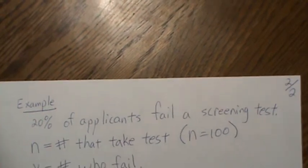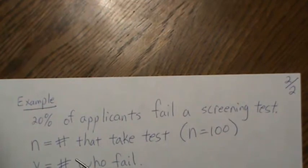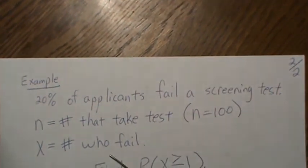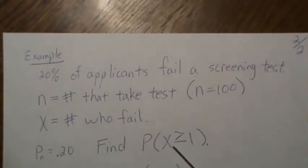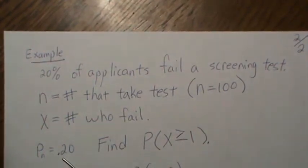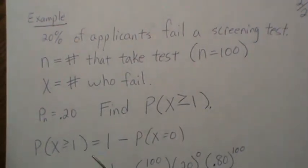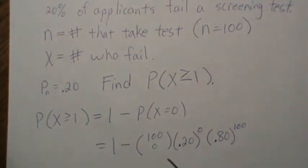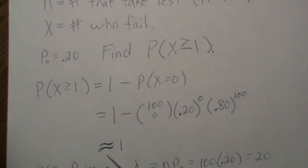So let's say 20% of applicants fail a screening test. And let's assume that 100 people take the test, and x is the number who fail. And we want to find the probability that at least one fails. p_n is 0.2. So the probability that at least one fails is one minus the probability that zero fails. And using the binomial formula is this, which is approximately equal to one.